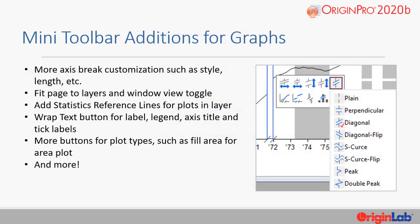2020 B offers several new additions to mini-toolbars for editing the graph as well, along with the ability to customize the buttons in the toolbar. New buttons include more axis break customizations such as style and length, fit page to layers, and window view toggle, add statistics reference lines for plots and layer, a wrap text button for the label, legend, axis title, and tick labels, and more buttons for plot types such as fill area for area plot, and more.